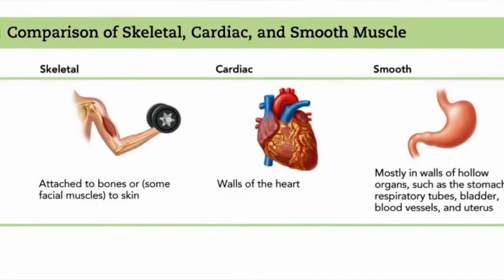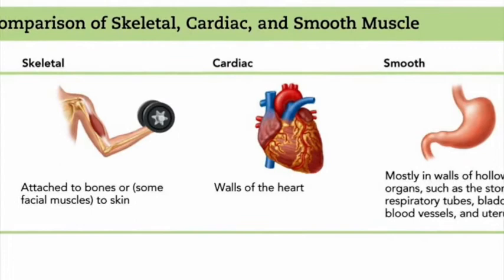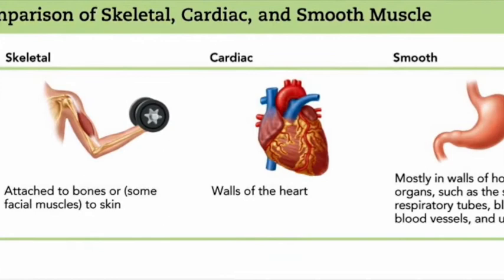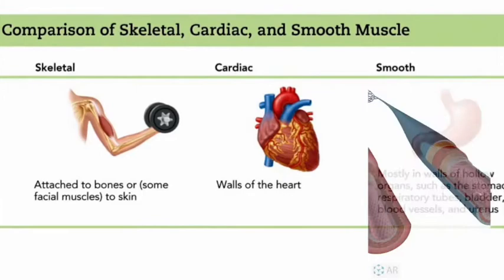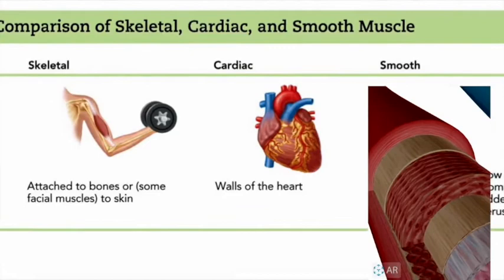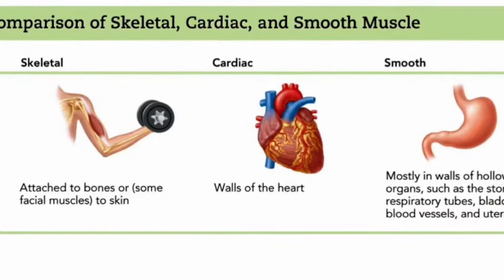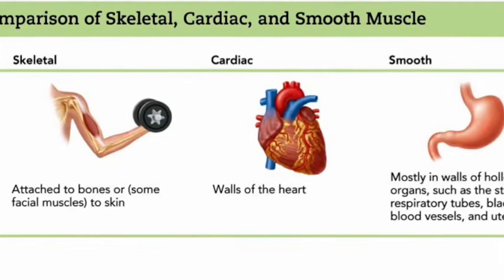We've been focusing on, and are going to continue to focus on, skeletal muscle tissue. But there are two other types of muscle tissue: cardiac tissue, which is found only in the heart, and smooth muscle, which we'll find all over the body. In particular, when we get to the digestive system, respiratory system, and vascular system, we'll find smooth muscle lining the walls of those hollow organs.